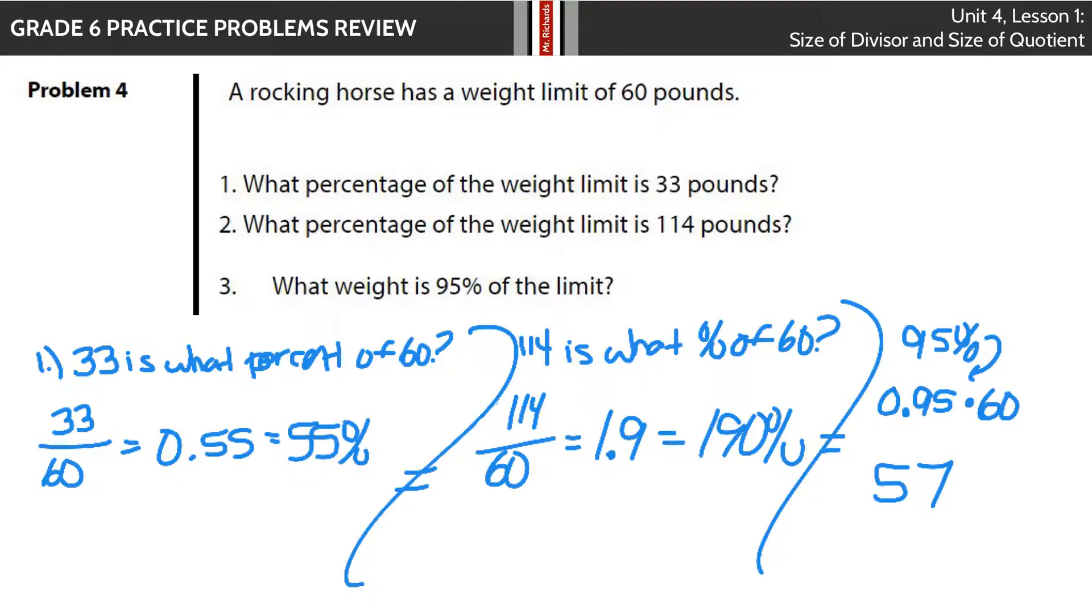Same concept here in part B. What percentage of the weight limit is 114 pounds? If you take 114 and divide by 60, you get 1.9. To get that to a percent, move the decimal over once, twice, and there's a zero here to get you 190%. For part C, what is 95% of the limit? Take 95% as a decimal, so move that decimal back twice to the left. You get 0.95 times 60, which gets you 57 pounds.